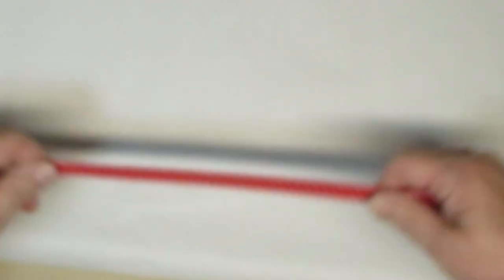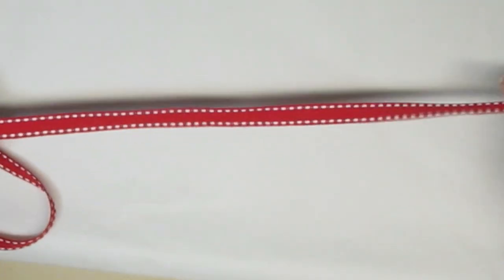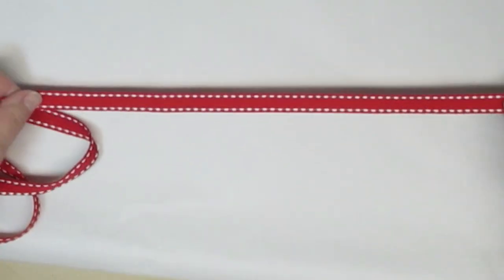You can make a two-finger bow from any type of ribbon. The length you'll need is approximately 24 to 30 inches. I like to use a little bit longer just so I have a little bit extra ribbon to work with.